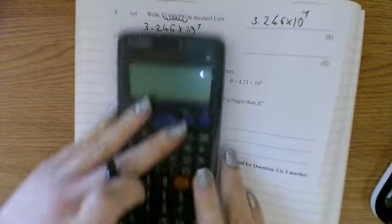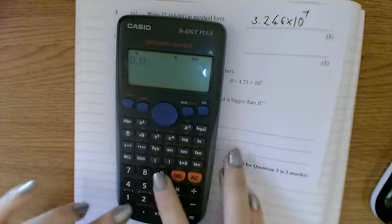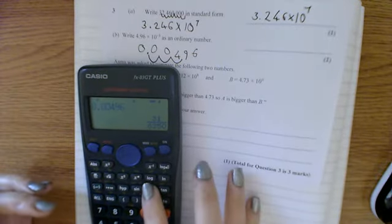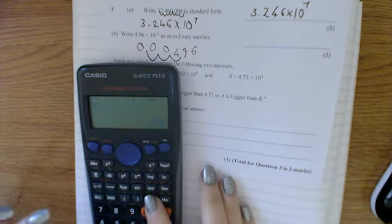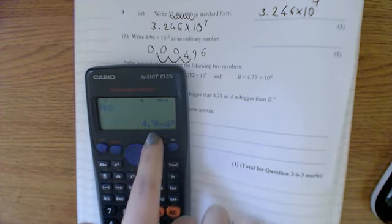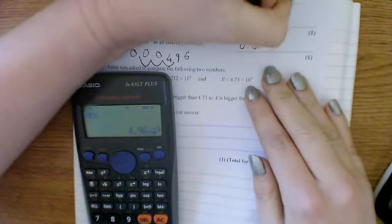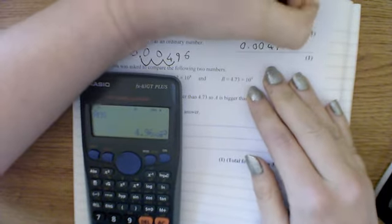Now as a check, let's try typing in 0.00496. And when I do that, my calculator tells me, yeah, that is 4.96 times 10 to the power of negative 3. So you can use that absolutely on the calculator paper. Take full advantage of that.